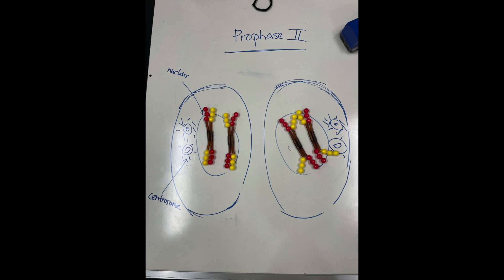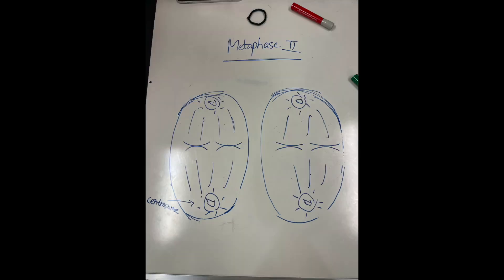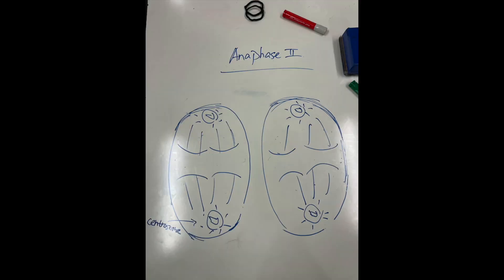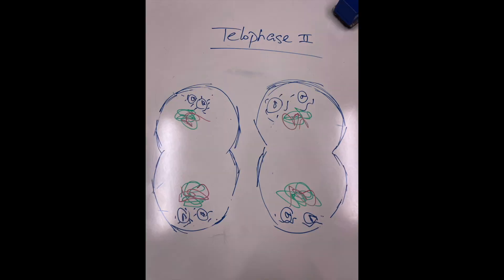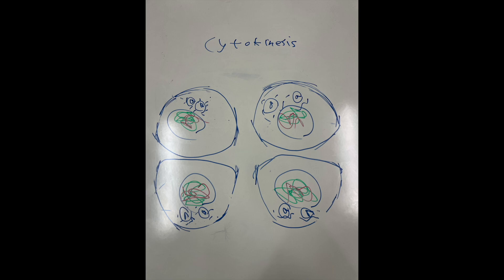In meiosis 2, this process is the same as mitosis, however, meiosis starts with a haploid cell instead of a diploid cell. Also, the end product is 4 daughter cells instead of 2 for mitosis. Thank you.